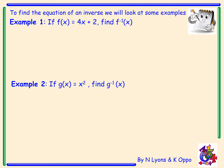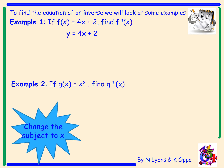So to find the equation of an inverse, we'll look at some examples. In example one, we've been given f of x is 4x plus 2, and we have to find f inverse. The first thing we do is state the function with y instead of f of x. We then change the subject of the formula to x: move the plus 2 over beside the y — change the side and change the sign — so y minus 2 equals 4x.